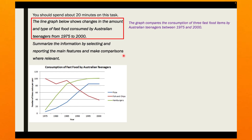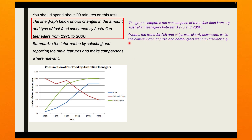Let's take a look at our graph and see what trends it has. From this line graph, we can clearly see that both the consumption of pizza and hamburgers increased, while the consumption of fish and chips — the red line — decreased. Here's what I wrote for the overview: 'Overall, the trend for fish and chips was clearly downward, while the consumption of pizza and hamburgers, the other two lines, went up dramatically.' This is a complete overview. Keep it simple and clear.